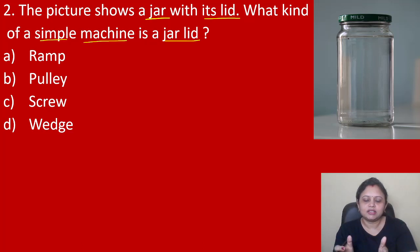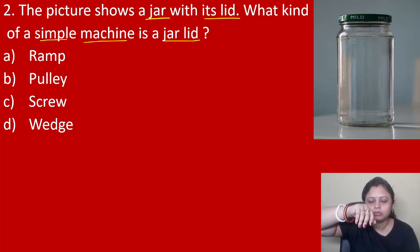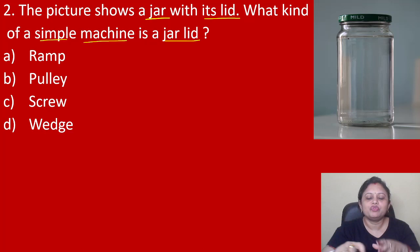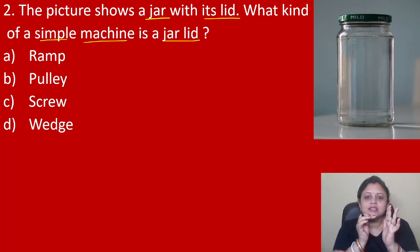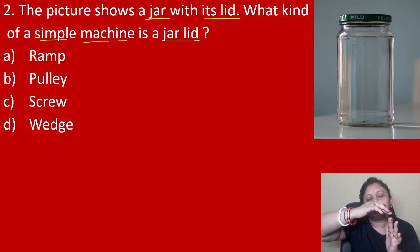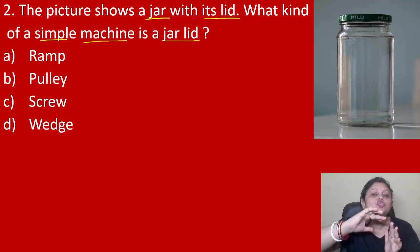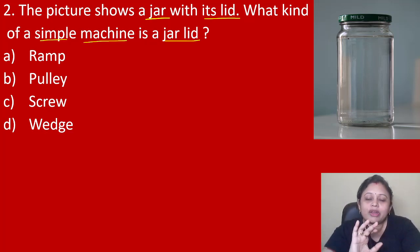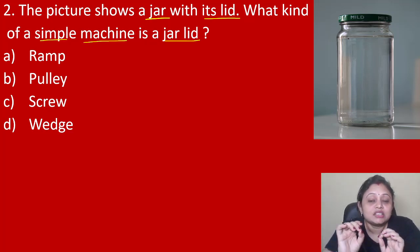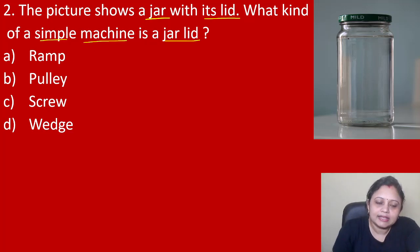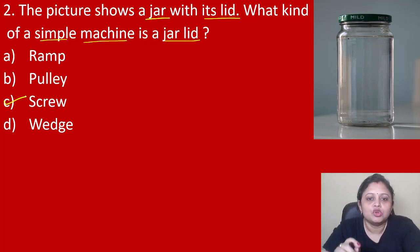What we do — we take the jar and put the lid on it. We tighten the lid or loosen the lid. There is a structure on which we are trying to tighten or loosen the lid. This is just like a screw. So the jar lid acts as the screw, and the correct answer is option C.